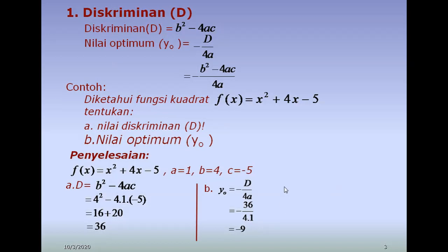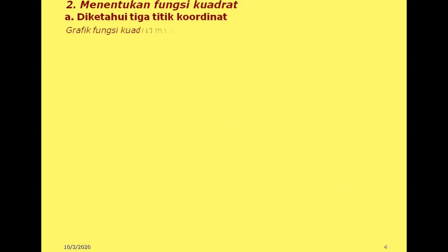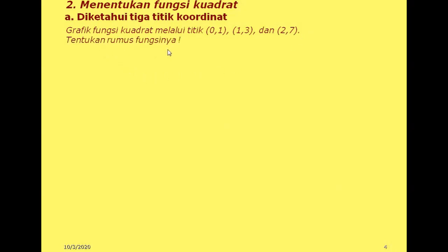Ini adalah cara mencari diskriminan. Diskriminan yang bisa digunakan untuk menentukan nilai optimum. Paham? Dan yang kedua, kita akan belajar cara menentukan rumus fungsi kuadrat. Untuk menentukan rumus fungsi kuadrat, ada beberapa ketentuan. Yang pertama, jika diketahui 3 titik koordinat. Perhatikan contohnya: grafik fungsi kuadrat melalui titik (0,1), titik (1,3), dan titik (2,7). Tentukan rumus fungsinya.